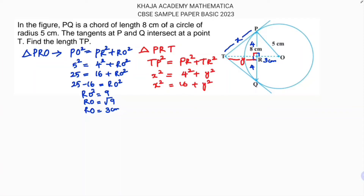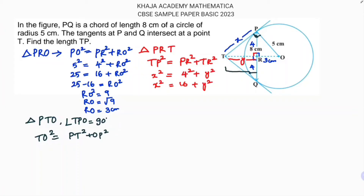Now I'll apply the Pythagorean theorem one more time for the larger triangle PTO. In triangle PTO, the angle between the radius and the tangent is 90°, so angle OPT equals 90°. The hypotenuse is TO. TO's total length is y plus 3, so (y+3)² equals PT² plus OP², meaning (y+3)² equals x² plus 5².